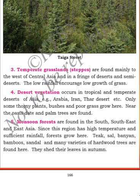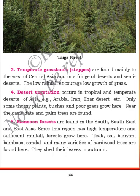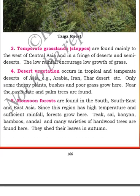The monsoon forest is found in South and Southeast Asia where there is high temperature and sufficient rainfall, which allows trees like sal, banyan, bamboo, and sandalwood to grow. In temperate grassland areas we find central steppes, deserts, and semi-deserts.